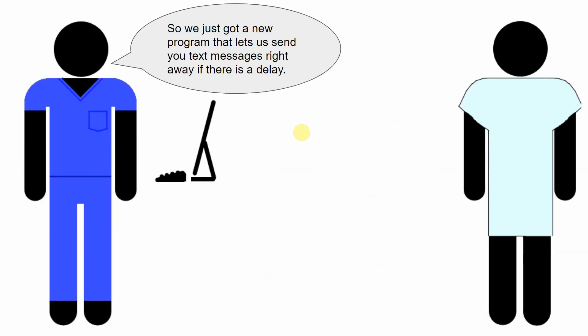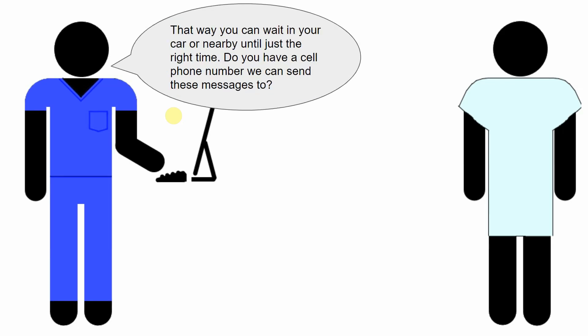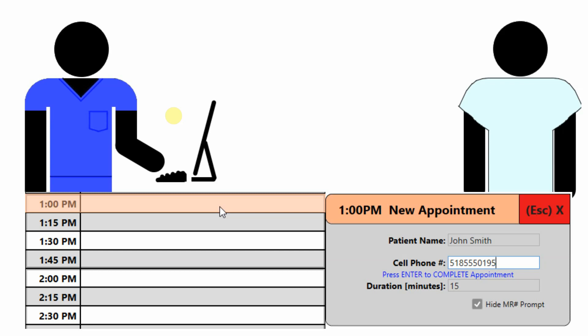Just as an example of how this might go for the therapist and the patient — when the patient is coming in or after treatment and about to leave, the therapist could simply say: 'We just got a new program that lets us send you text messages right away if there is a delay. It also lets us send you a please-come-in text message when we are ready for you, sort of like those restaurant buzzers. That way you can wait in your car until just the right time. Do you have a cell phone number we can send these messages to?' If the patient has one, the therapist could simply click the time slot, type in the patient name and cell phone number, and press Enter, and now they're entered into the system.